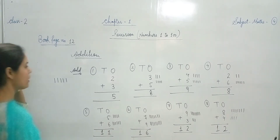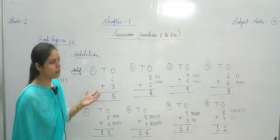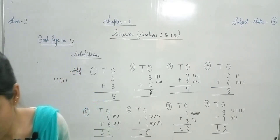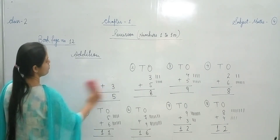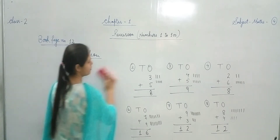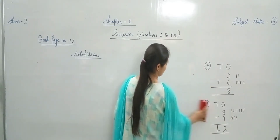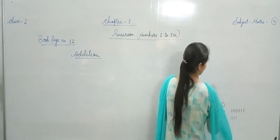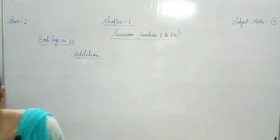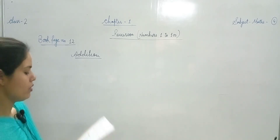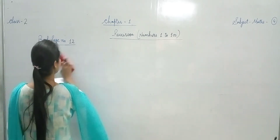So हमने lines draw करके, lines की help से simple numbers का addition करना सीख लिया है। अब हम आगे book page number 12 की 'solve the following' section करते हैं — heading: addition में solve the following.